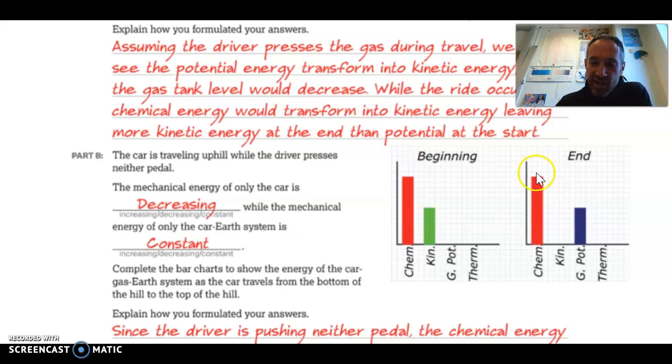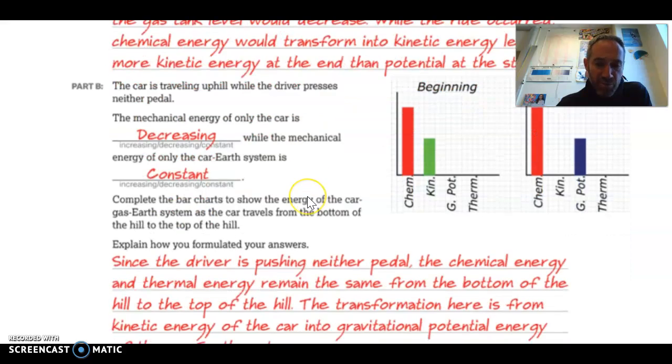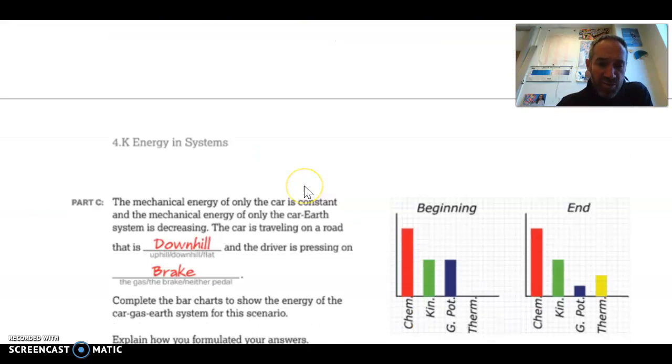You can see that the chemical energy is unchanged there. And for the car gas Earth system, kinetic energy is going from something down to nothing, and that energy is basically just put right next door, right into the gravitational potential spot.